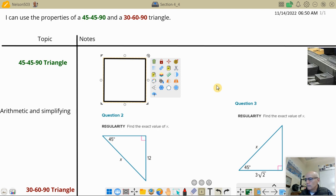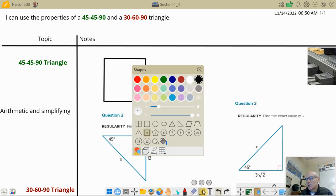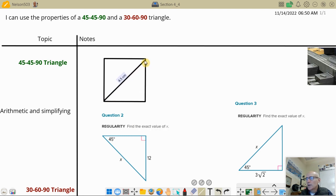Again, you might be saying, I thought we were talking about triangles. Why did you draw a square? Well, let's draw in the diagonal, just one of them. Draw in one diagonal. Now think with me for a moment.